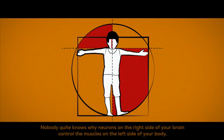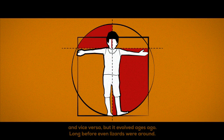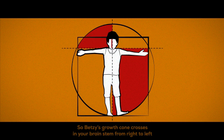Nobody quite knows why neurons on the right side of your brain need control muscles on the left side of your body, and vice versa, but it evolved ages ago, long before even lizards were around. So Betsy's growth cone crosses in your brain stem from right to left and then continues on down your spinal cord.